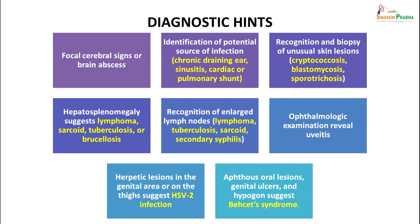Diagnostic hints which help focus on where the infection is occurring include: focal cerebral signs or brain abscess, identification of potential source of infection like chronic draining ear or sinusitis, cardiac or pulmonary shunt, biopsy of unusual skin lesions as occur in cryptococcosis, blastomycosis, sporotrichosis. Splenomegaly might suggest lymphoma, tuberculosis, brucellosis, sarcoidosis. Enlarged lymph nodes again suggest chronic illness like tuberculosis or lymphoma. Ophthalmic examination might reveal uveitis. Hepatic lesions or genital ulcers may suggest HIV or specific syndromes like Behçet's syndrome.